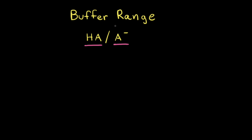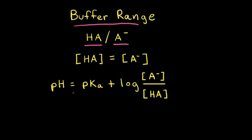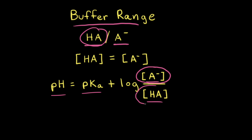We are going to use the Henderson-Hasselbalch equation to find the effective pH range of a buffer. Looking at the Henderson-Hasselbalch equation, the pH of the buffer solution is equal to the pKa of the weak acid, which would be HA, plus the log of the concentration of the conjugate base divided by the concentration of the weak acid. It is this ratio of the concentration of the conjugate base to the concentration of the weak acid that determines if a buffer is effective or not.